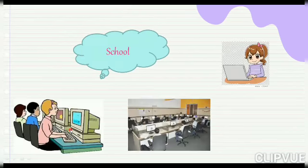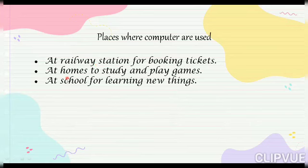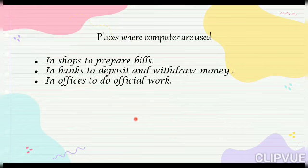So we have discussed six places where computers are used: the first place is the railway station, second is home, third is school, fourth is shops, fifth is banks, and sixth is offices. These are all the places where computers are used for different kinds of work.